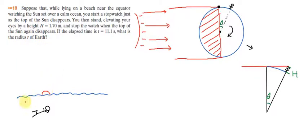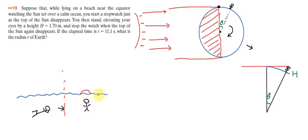Let me draw this situation. There's a guy lying on the beach — this is supposed to be the ocean — and this is the sun. So the sun has just disappeared. Then he stands up, and the sun reappears like that — he can see the top of the sun again. After 11 seconds, the sun disappears once more.